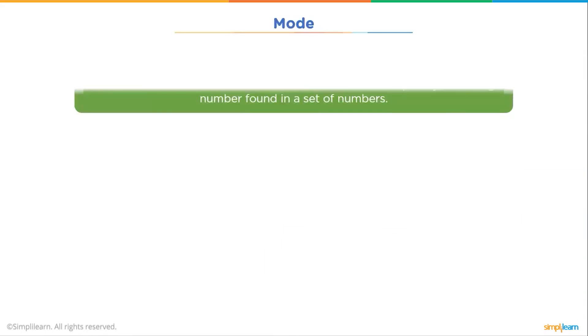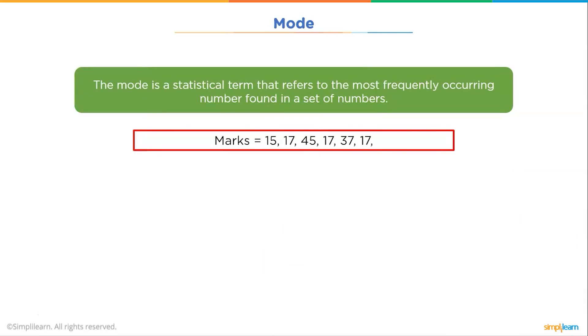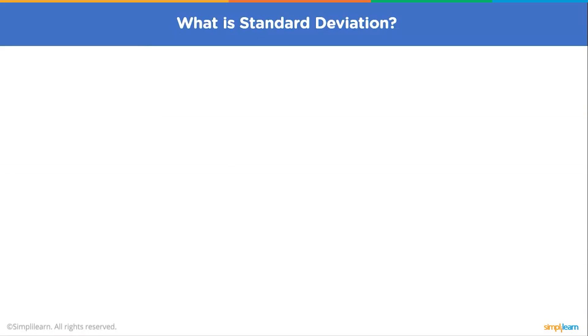The next term is mode. The mode is the most frequent score in our data set. So suppose we have this following example. Here you can see the mark 70 is occurring three times. So this is our mode.